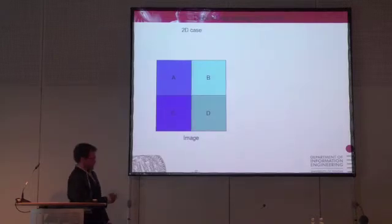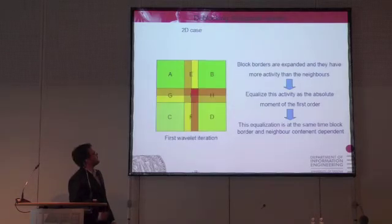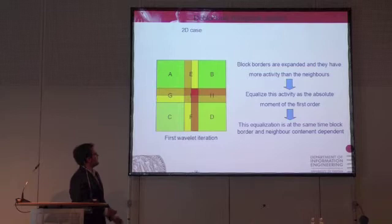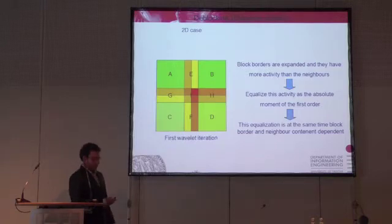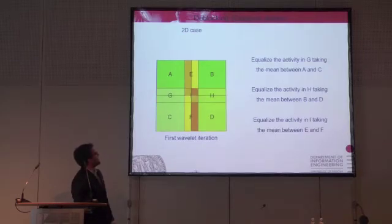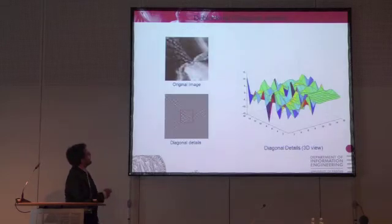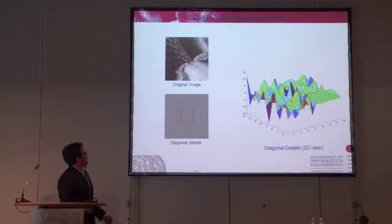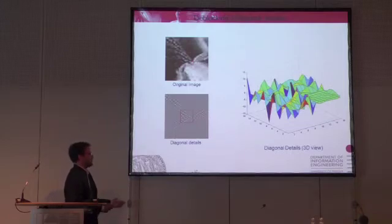How can this be applied for an image? Let's consider four blocks in the image. We have that in the wavelet domain, especially in the diagonal detail sub-bands, the block borders are highlighted and usually show higher activity than their neighbors. We could equalize this activity with the neighbors using the absolute moment of the wavelet coefficients. For example, we can equalize the vertical neighbors using vertical neighbor content, then equalize again using the horizontal output. The idea is to achieve this automatically, without using any threshold or additional parameters.